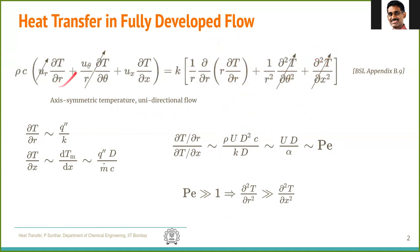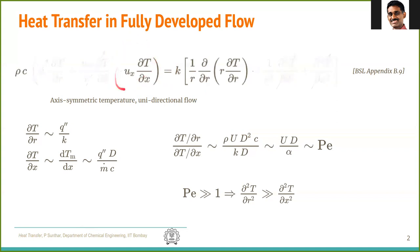Finally, what we are left with is just one convective term and one conductive term. Notice that although ∂T/∂x appears in the convective term, we cannot neglect it, because the rule for dropping terms only applies when two terms appear additively. We don't have a term like u_x·(∂T/∂r) to compare it with — u_r·(∂T/∂r) is anyway zero — so we must retain the u_x·(∂T/∂x) term. The simplified equation is ρ·Cp·u_x·(∂T/∂x) = k·(1/r)·∂/∂r(r·∂T/∂r).